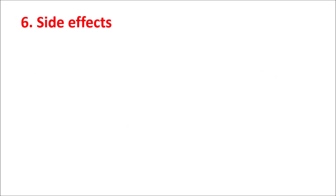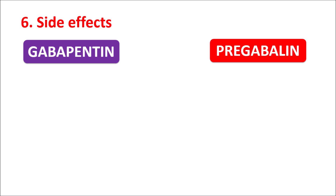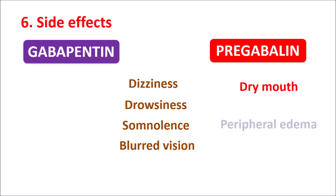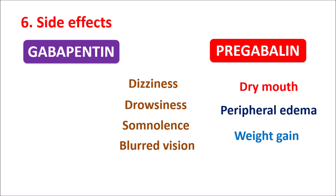The sixth point is side effects. Both Gabapentin and Pregabalin show similar side effects, acting centrally to produce dizziness, drowsiness, somnolence, and blurred vision. However, some side effects are more pronounced with Pregabalin: it can produce dry mouth, peripheral edema, and weight gain. On the other hand, Gabapentin can produce nystagmus — involuntary movements of the eye — and hyperkinesia, which are jerky motor movements. So dry mouth is more troublesome with Pregabalin, and involuntary movements are more troublesome with Gabapentin.